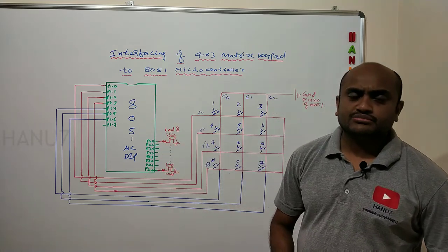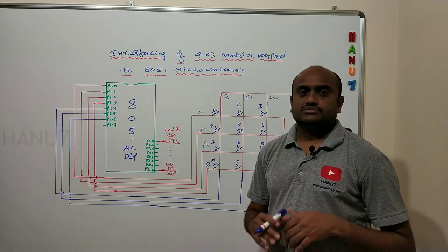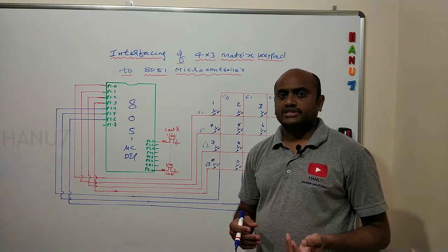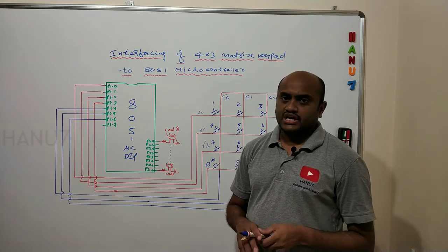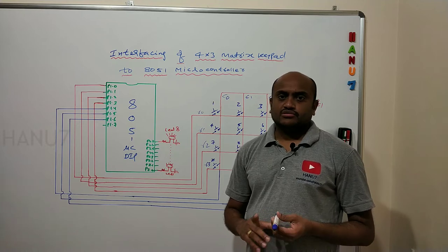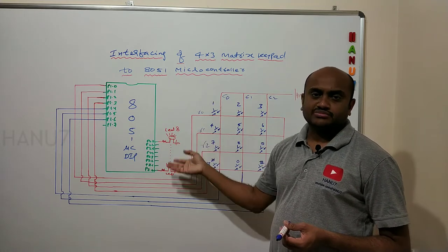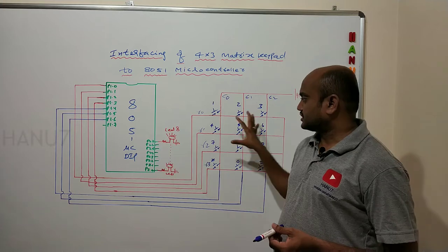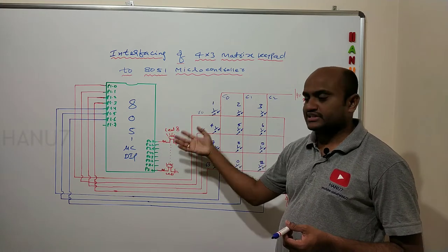After interfacing this device to the microcontroller, in order to get acknowledgement of reading a particular key, I have connected 8 LEDs to the microcontroller. Whenever I press a particular key, I would like to display something onto these output devices. This is the input device, and I have selected output devices: LED or LCD.